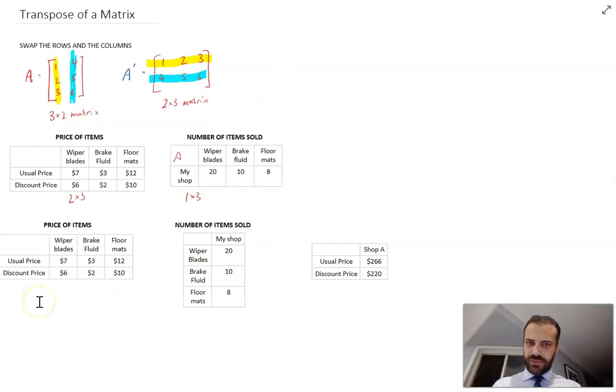Alright, so now if we have a look here, what we have is a 2 by 3 matrix here and a 3 by 1 matrix here.